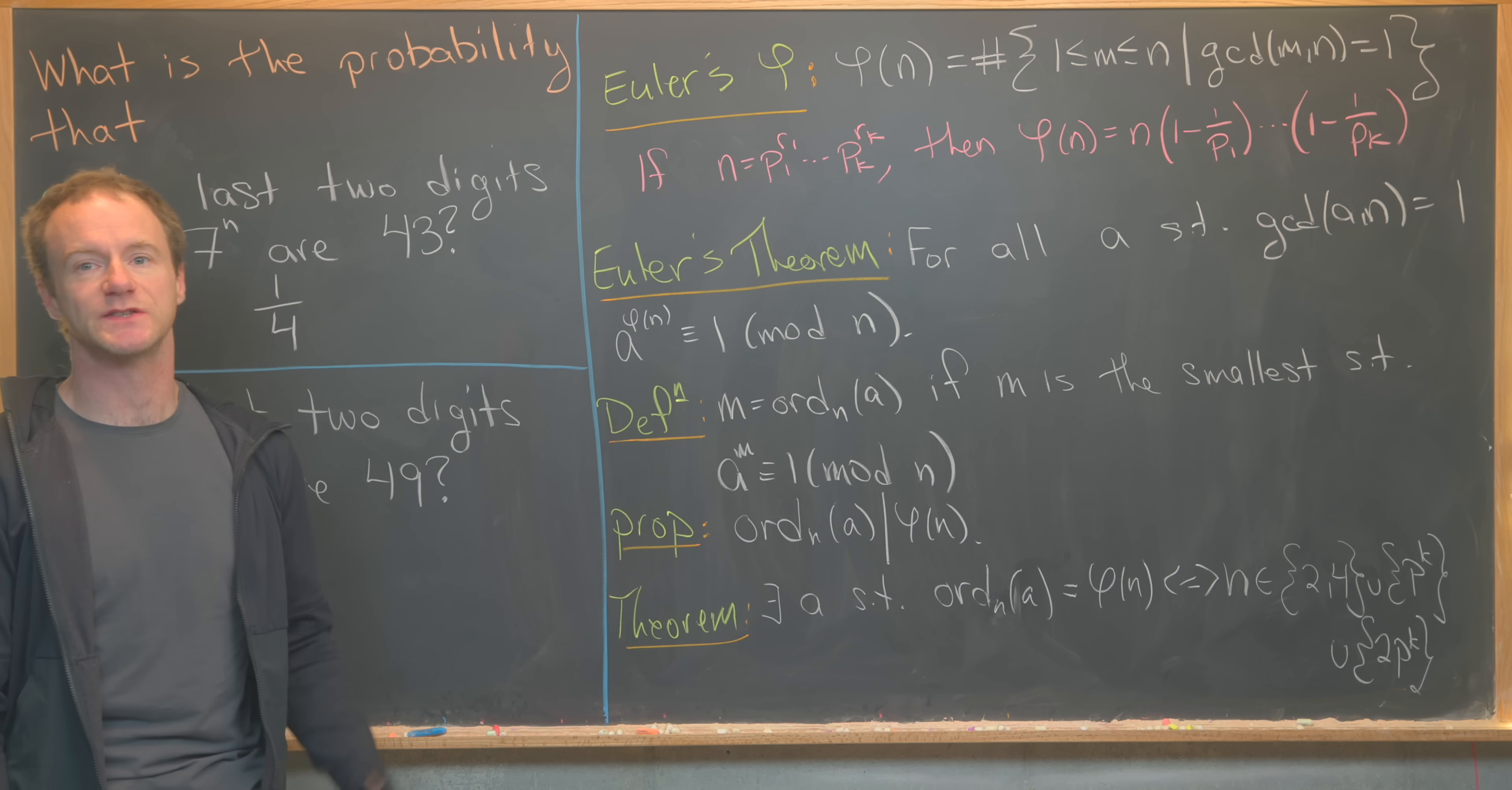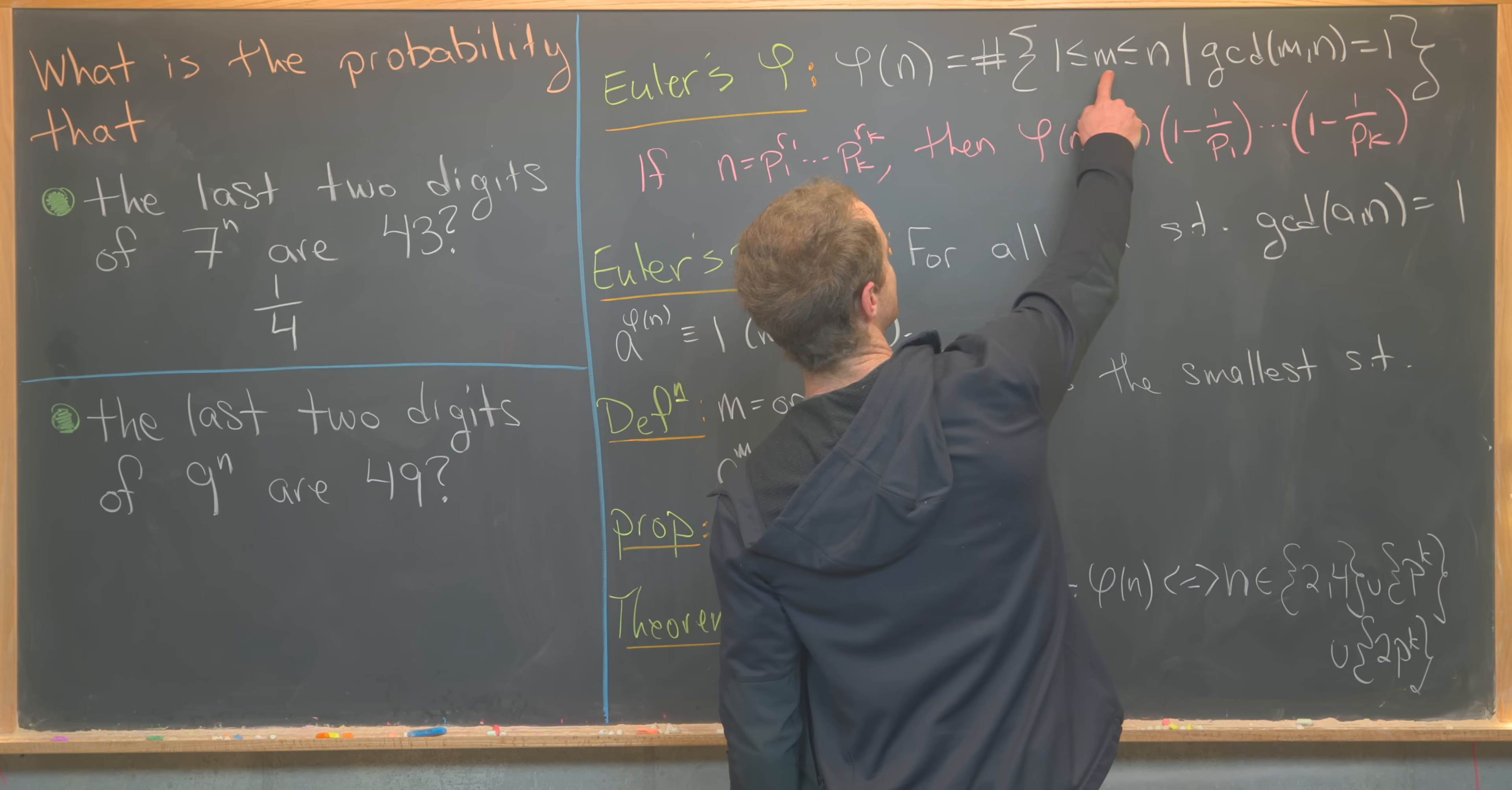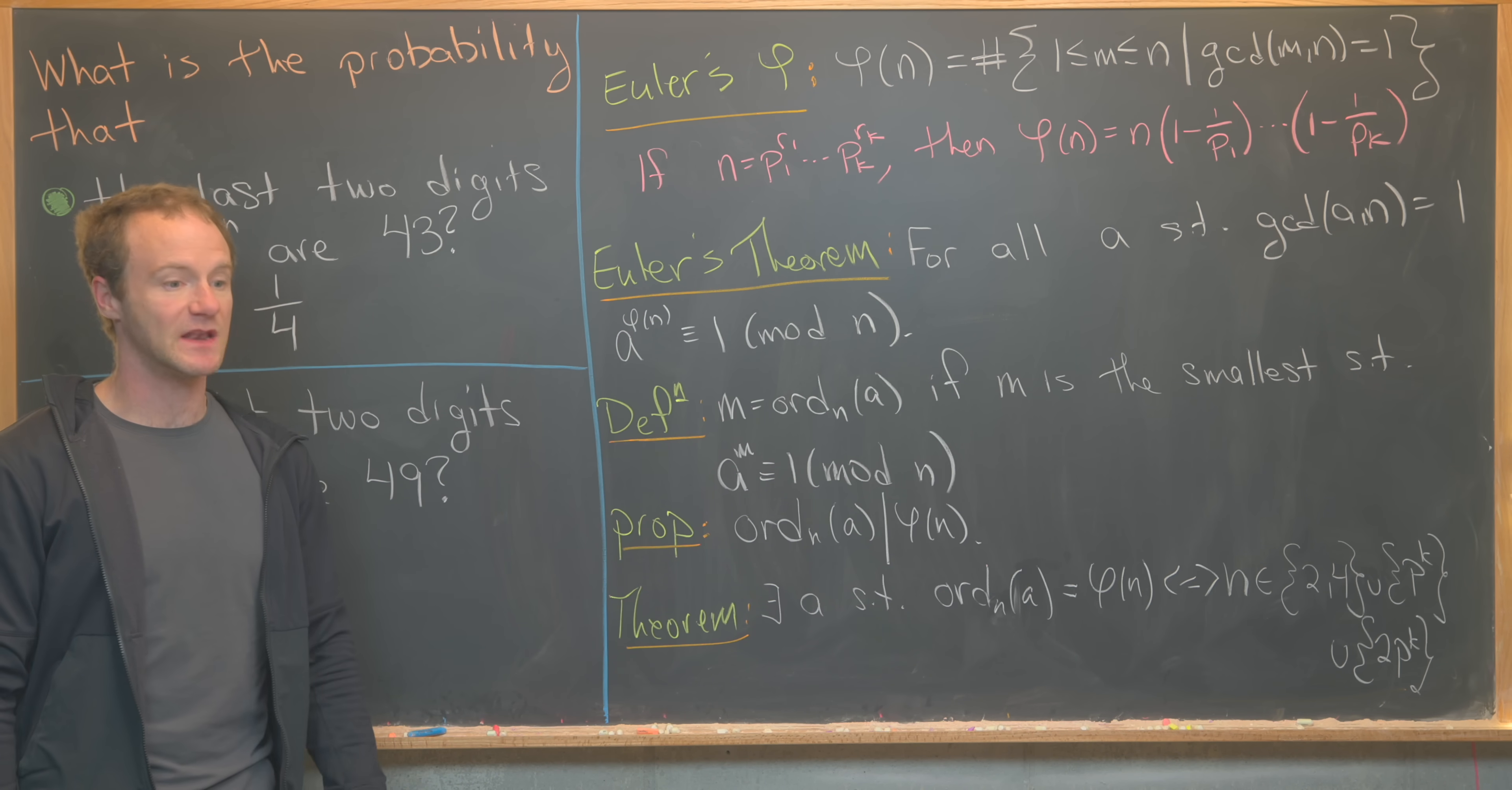So the first thing that I want to recall is Euler's totient function, sometimes called Euler's phi function. So it's defined so that phi of n equals the number of positive integers between 1 and n that are relatively prime to n. So in other words, their GCD with n is equal to 1. So notice if you've got like the number 6, then phi of 6 is equal to 2 because there are only two numbers between 1 and 6 that are relatively prime to 6. Those are 1 and 5.